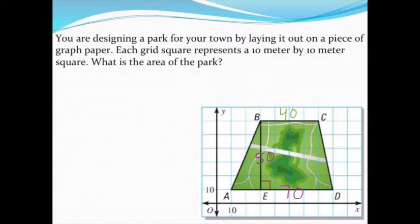If we're ever given a coordinate grid, we can find the area by counting or finding the distance of the sides we need. In this case, we're asked to find the area of this trapezoid. I've already counted the sides I needed.